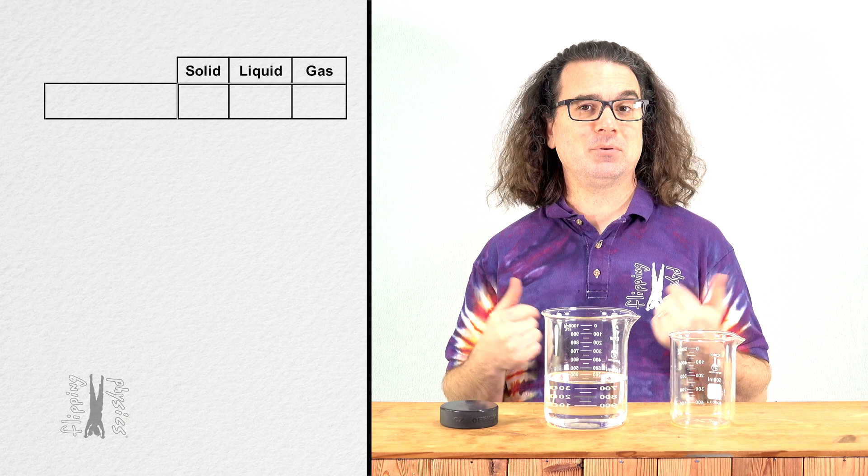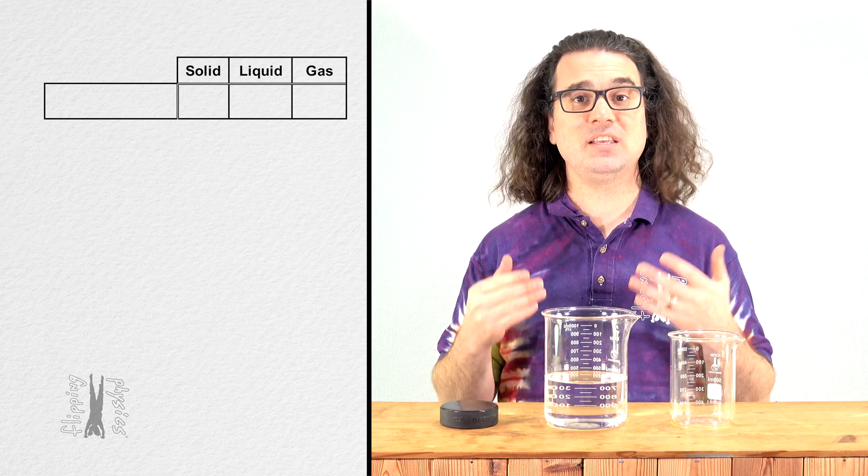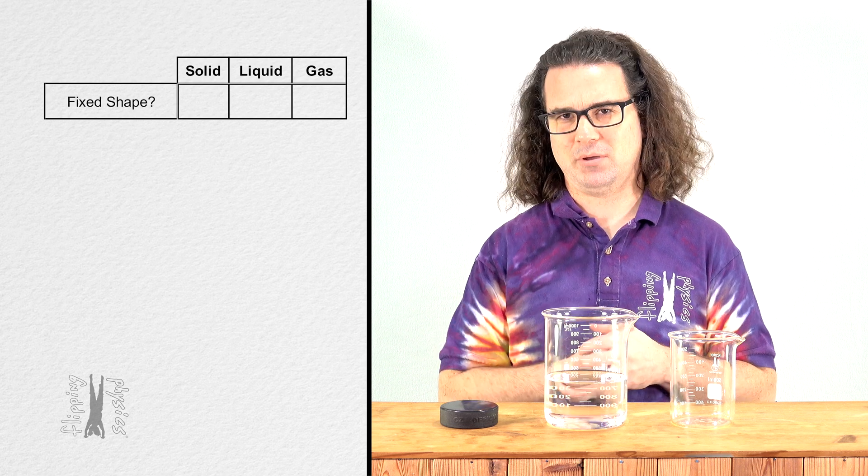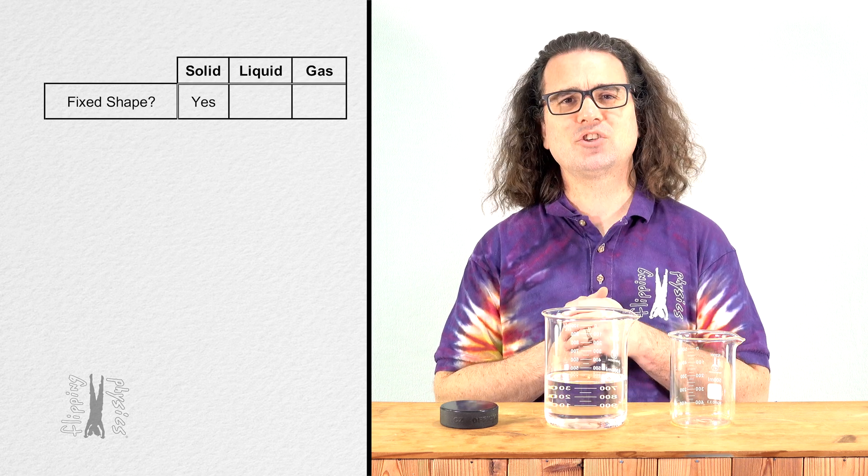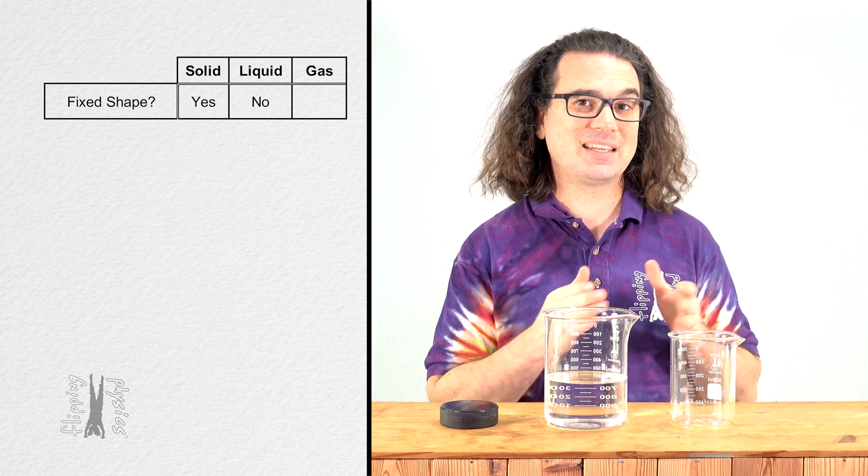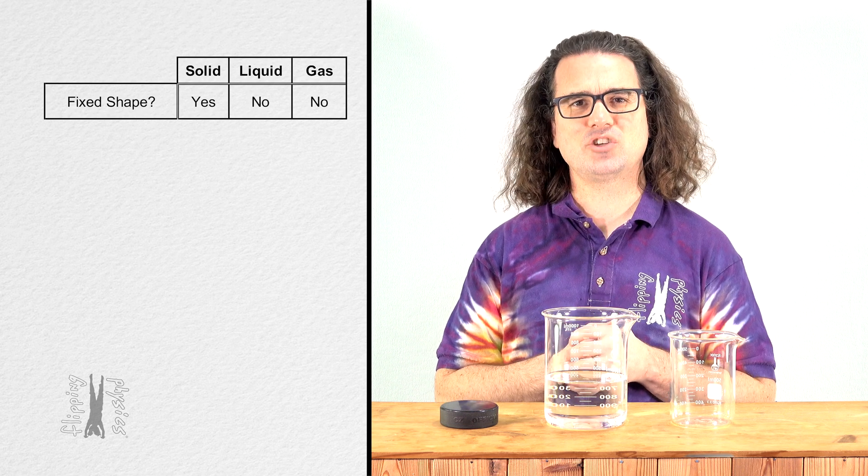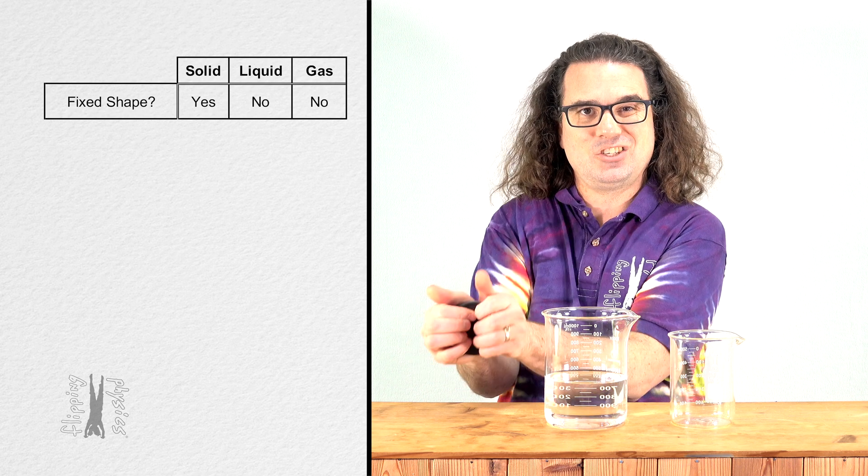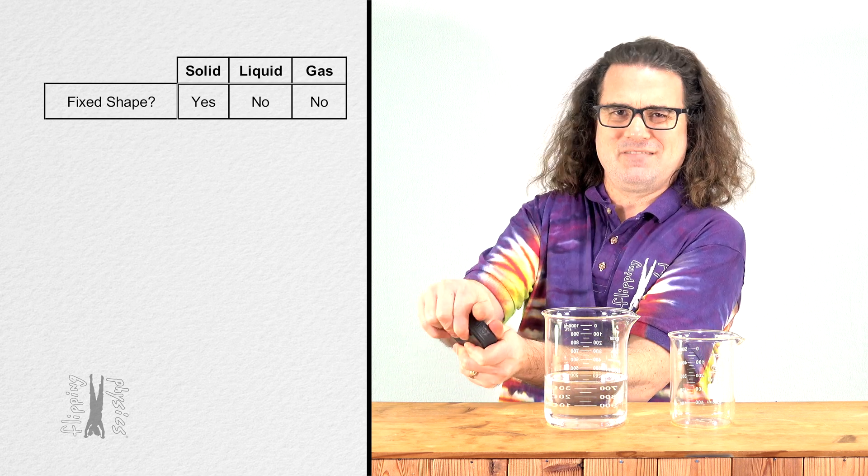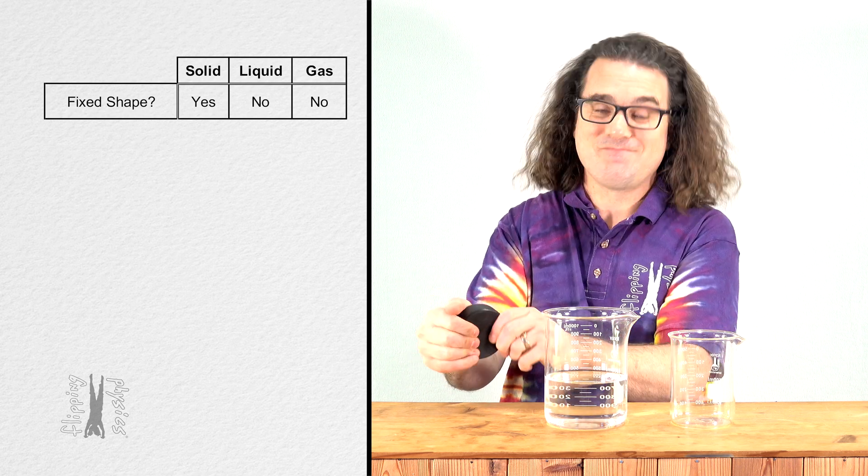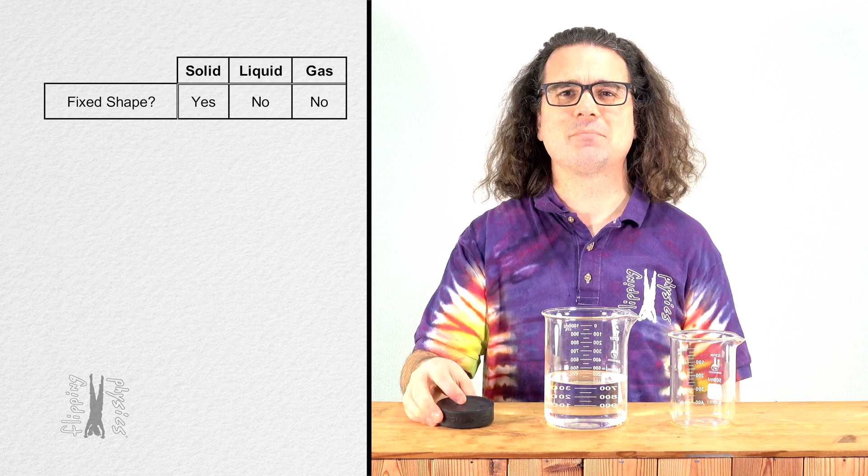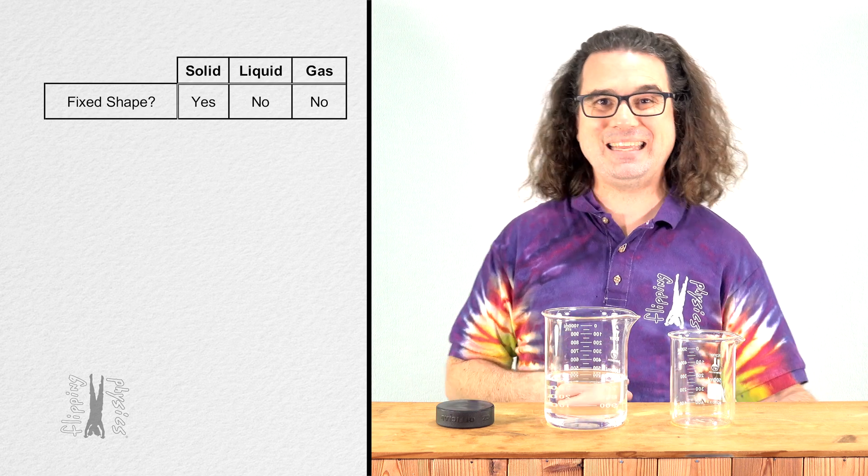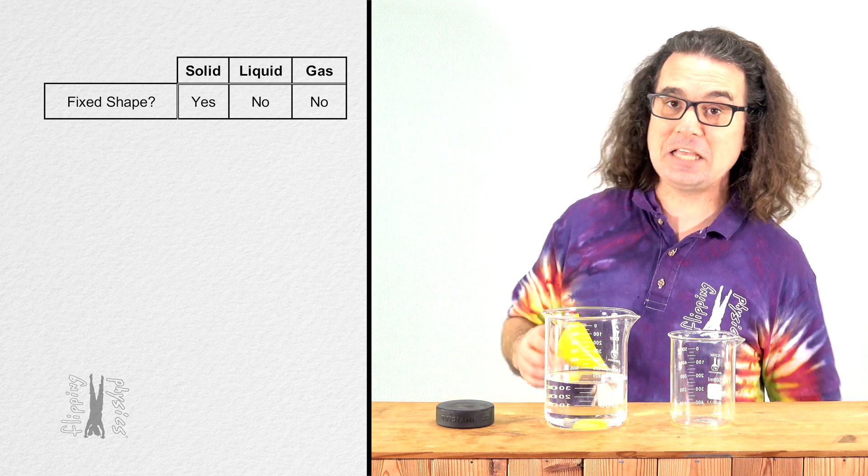Let's make a table to identify the differences between these three states of matter, starting with whether or not they have a fixed shape. A solid has a fixed shape, whereas liquids and gases do not have fixed shapes. You can see that when I apply forces trying to change the shape of the hockey puck, that does not change the shape of the hockey puck. However, I can change the shape of the water just by pouring it into a different container.